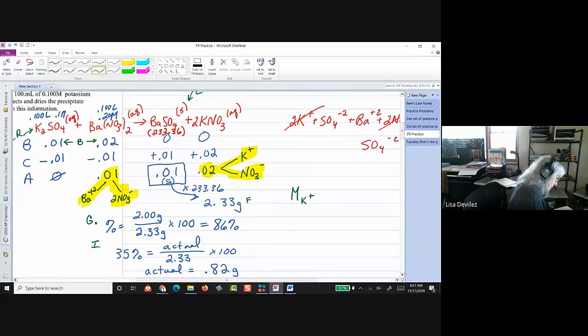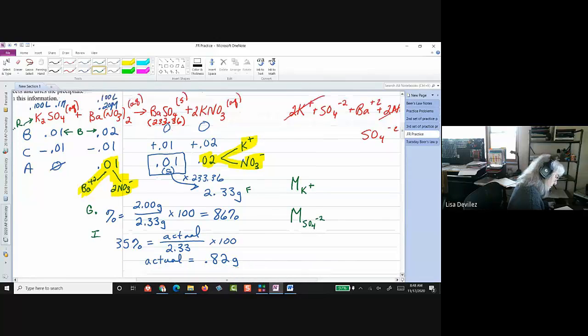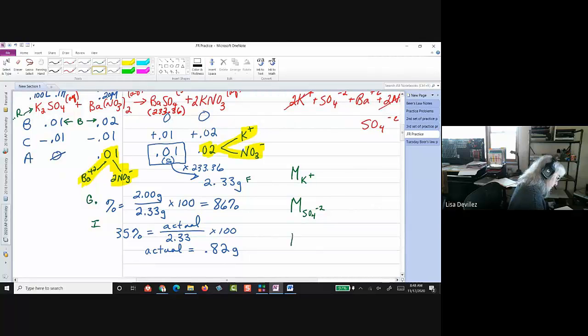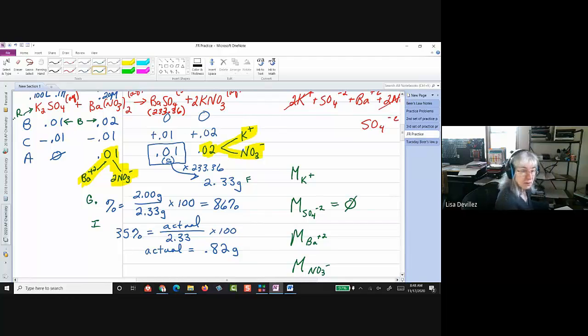I have potassium, sulfate, and barium, and nitrate. Okay. So, the one thing that doesn't appear is the sulfate. So, it's zero, because it doesn't show up in the after line at all.